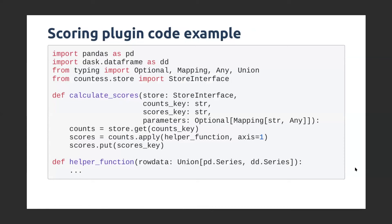You can change the helper function, or if you have a method where you want to share information across all of the variants, you have complete access to that as well. That's the way Enrich2 does things — it treats variants very independently — and so if all you wanted to do is change up the helper function, you can do that.